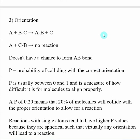Orientation is a little bit trickier. Molecules A and BC need to collide in the proper orientation for the reaction to occur. Here, A is coming in reacting with the B side of this molecule and kicking out C. So A needs to attack the B side of the molecule for the reaction to occur. However, if A comes in on the C side, there's no reaction.